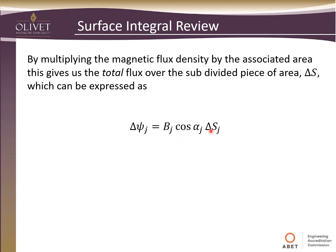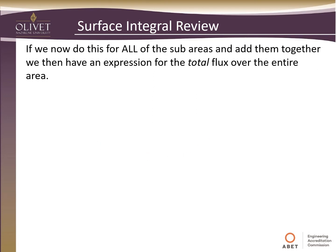And so here you can see we have it for each of the subdivided little squares. Just as we said, the magnitude of the magnetic field times the cosine of the alpha between them and the area vector. So if we now do this for all the sub areas and add them together, we then have an expression for the total flux over the entire area.